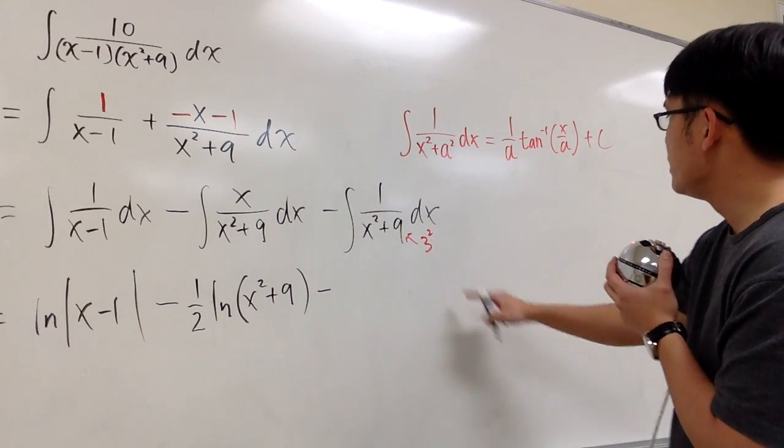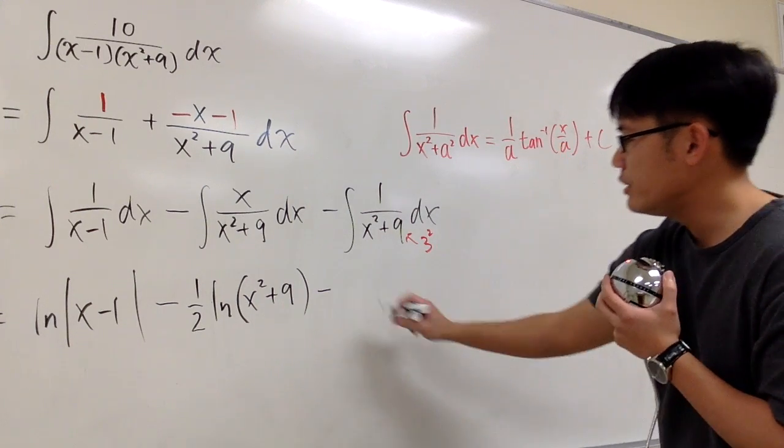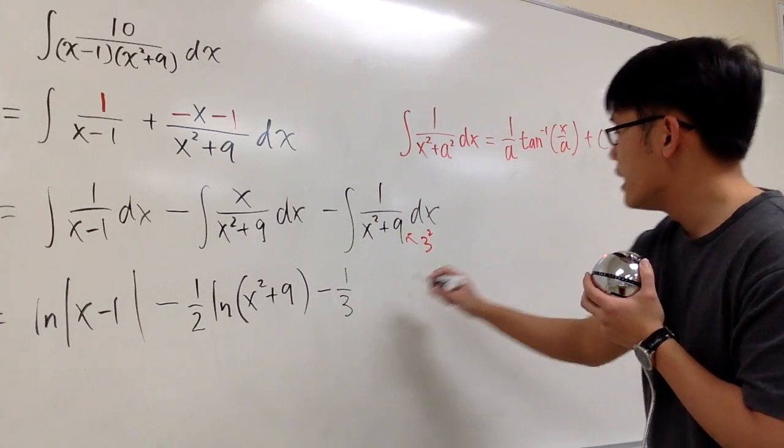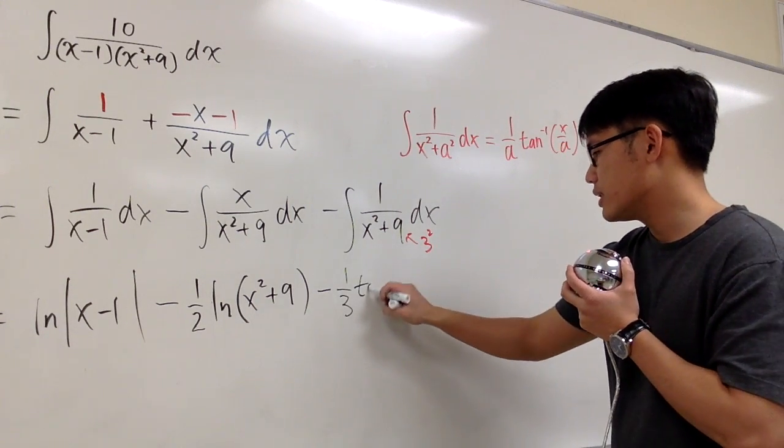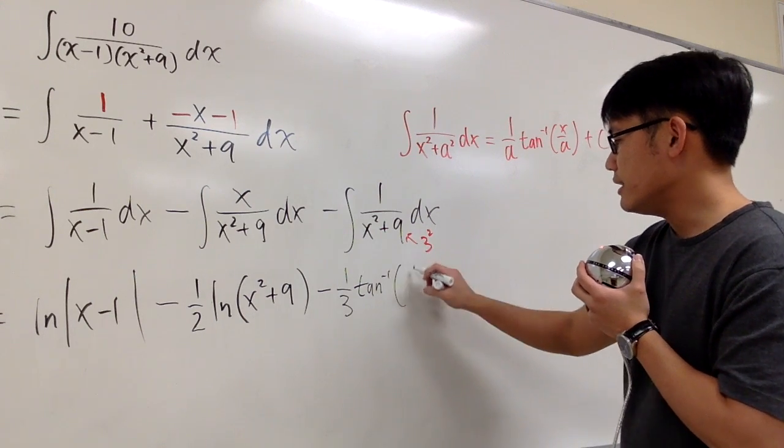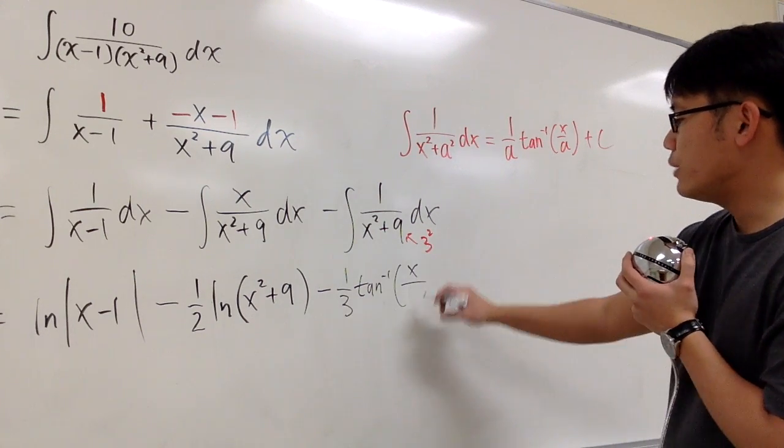Minus, this integral will be 1 over a, a is 3, so we have 1 over 3. And we have the inverse tangent x over the a, which is 3.